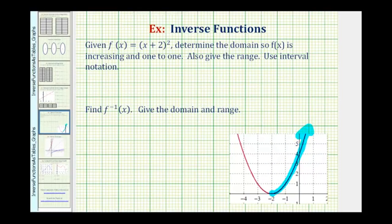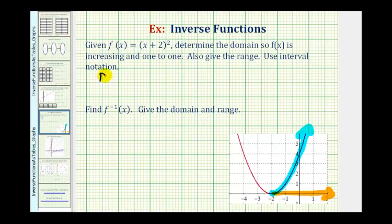The domain is the set of all possible x values, so if we project this graph onto the x-axis, notice how the domain would be from negative two to the right, or from negative two to infinity. It would include the vertex, so we'll include negative two in the domain. Using interval notation, the domain would be from negative two to infinity, closed on negative two, meaning it includes negative two.